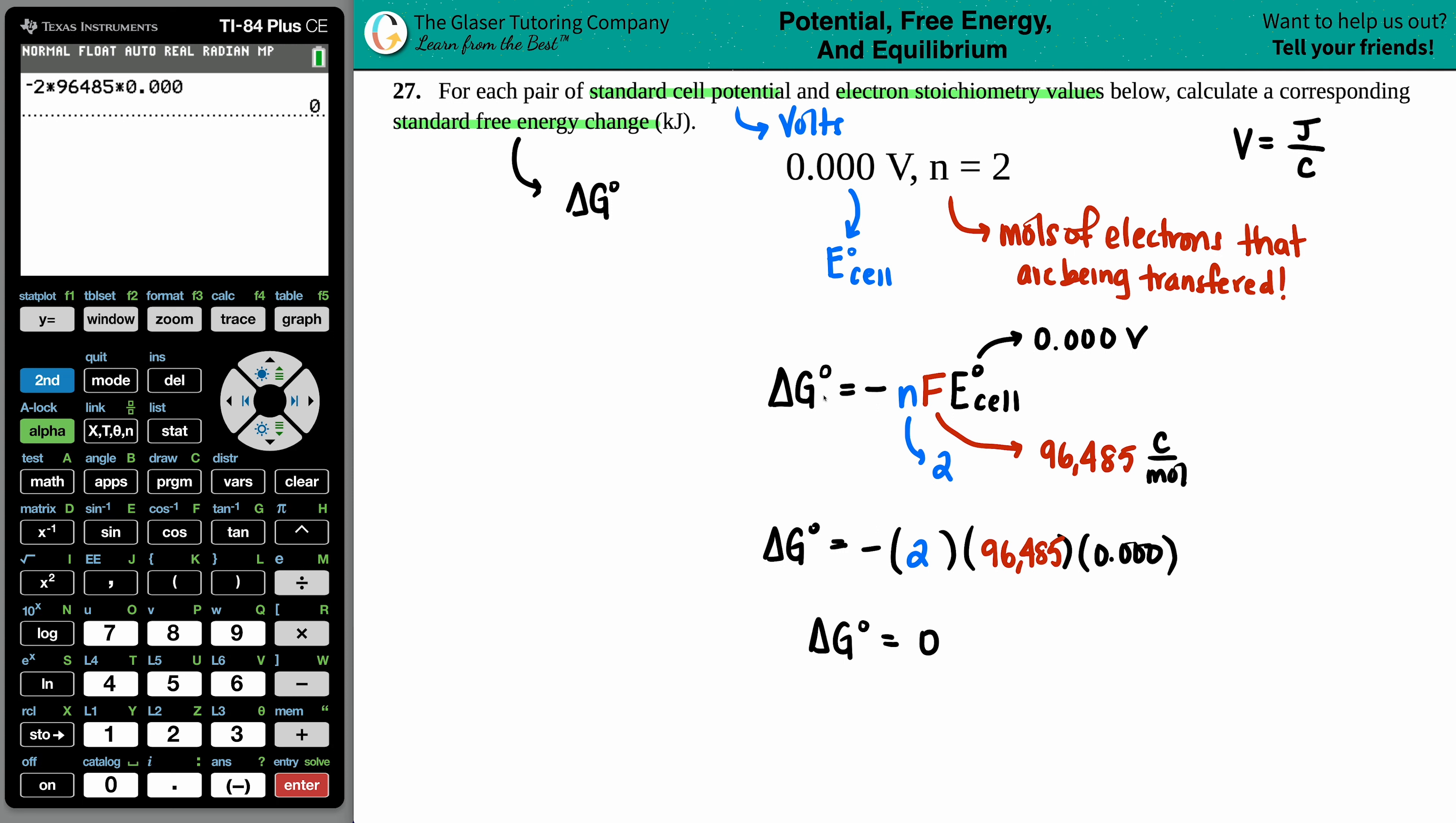Now just know that when you're using this formula, because the joules is secretly in the volts, this is going to come out in joules. So this is technically zero joules.